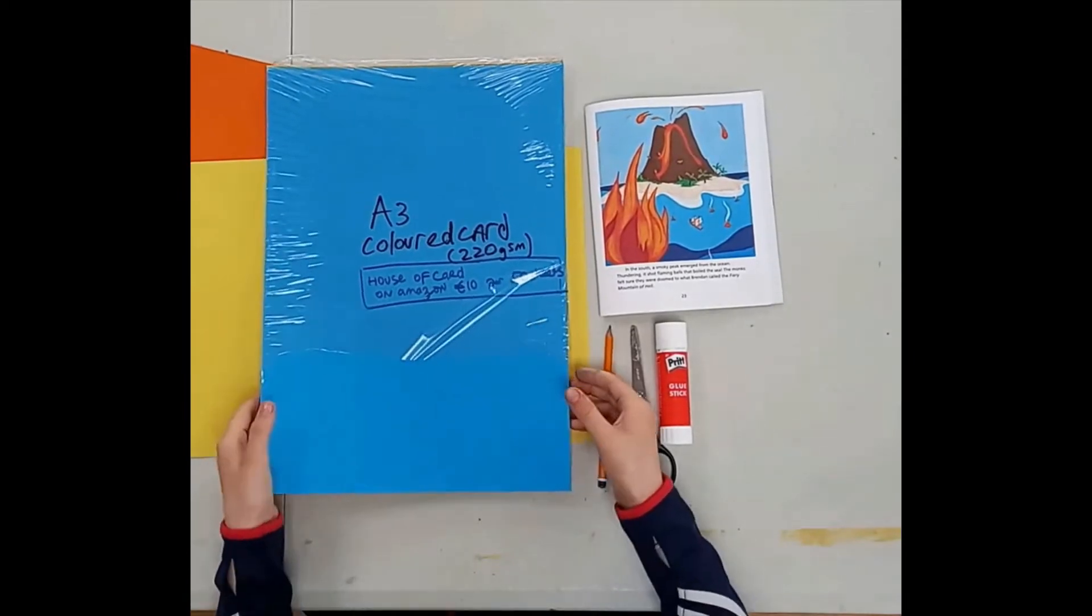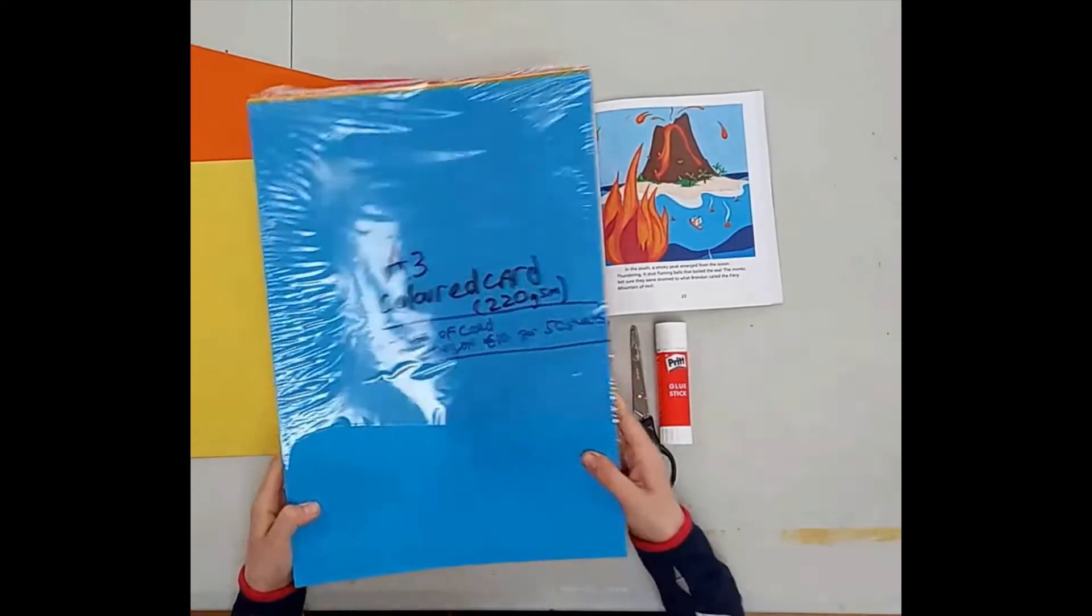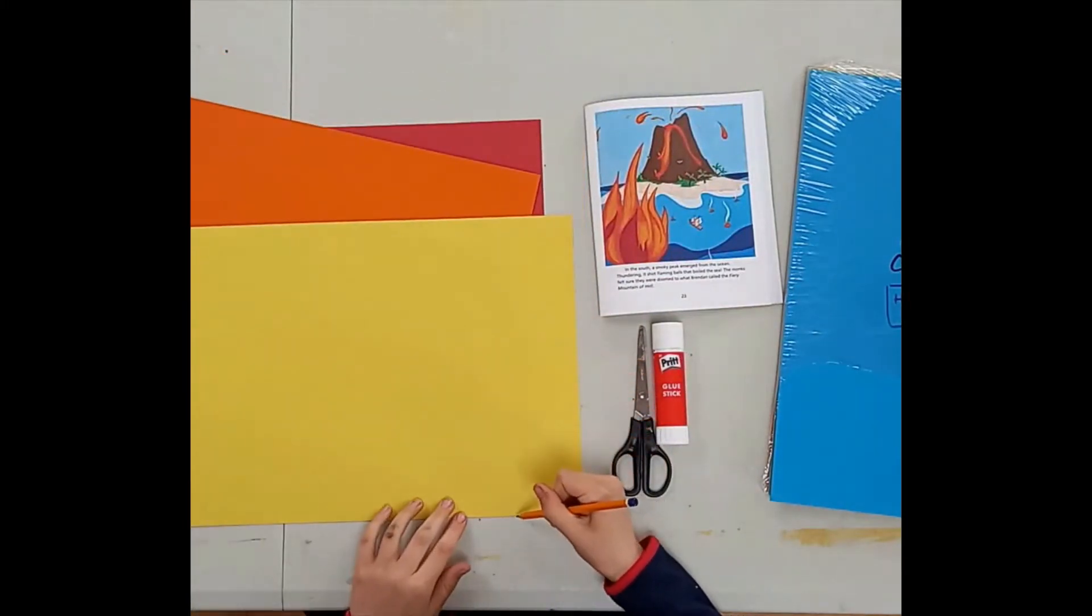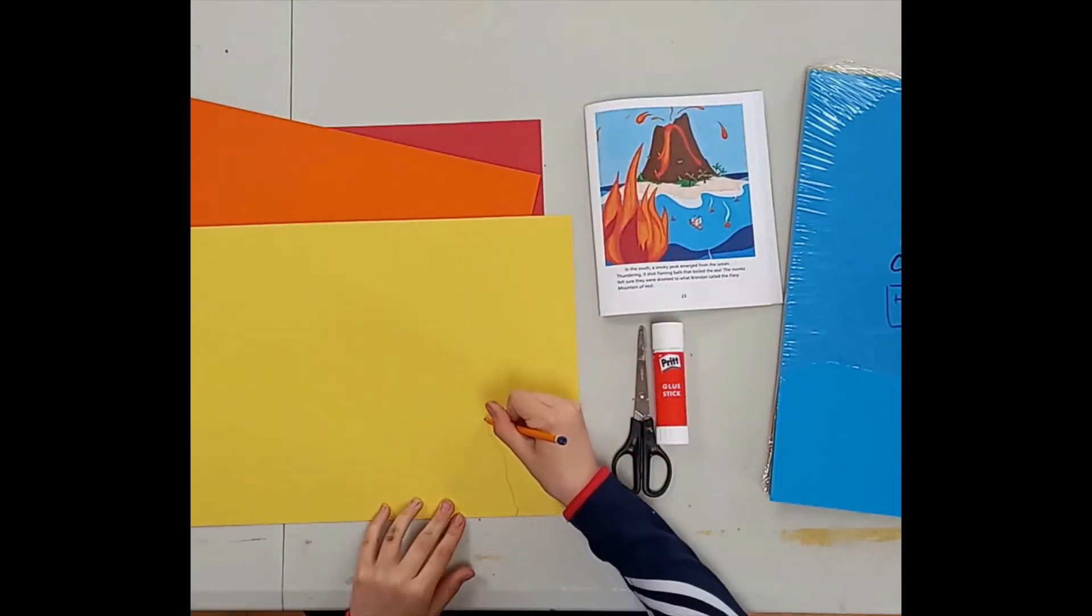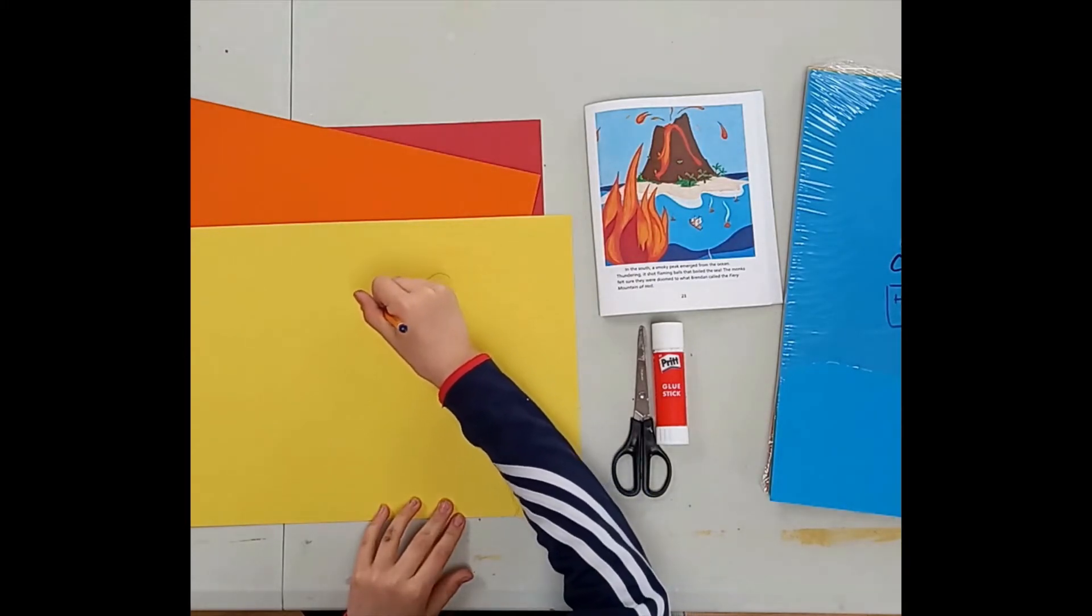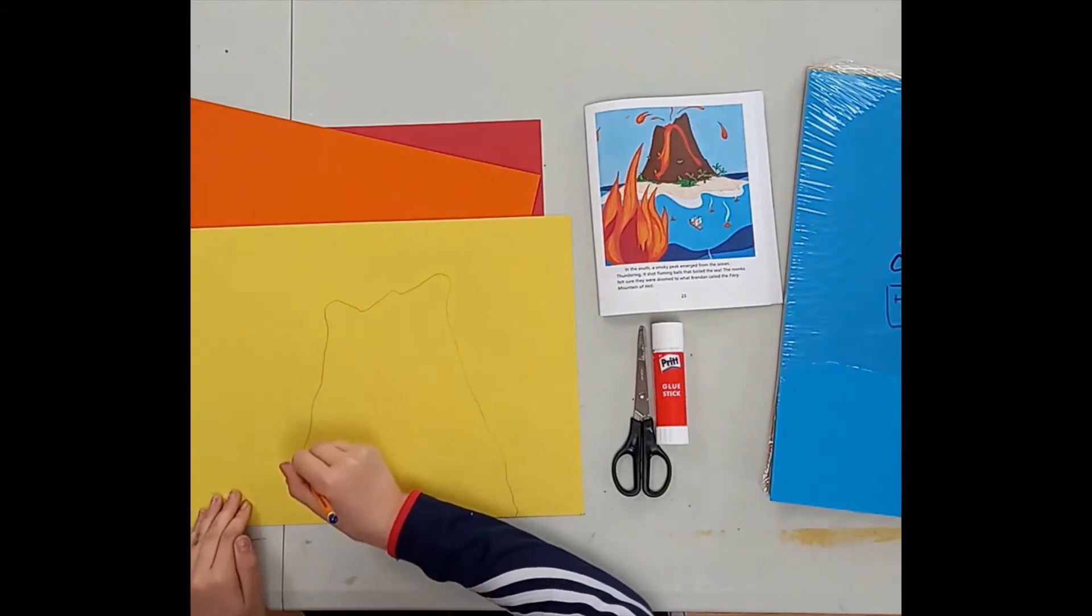For this exercise we will use A3 coloured card. Once children have looked at some of the images from the Voyage of St Brendan, ask them to cut out shapes for collaging in order to represent the fantastic sights that Brendan encountered on his epic journey.